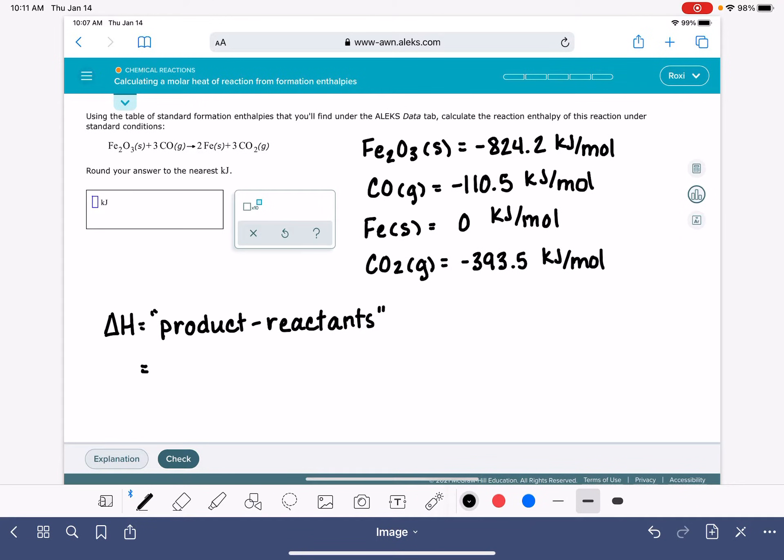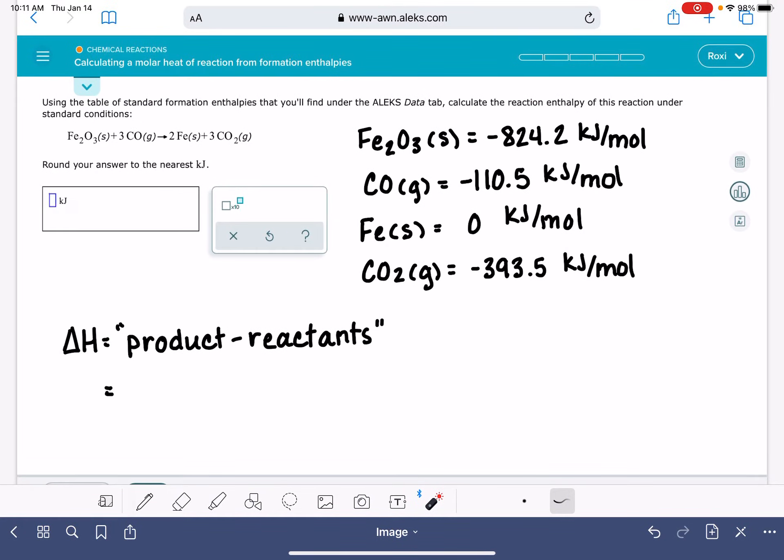So what we're going to do is take each one of the products one at a time. The first one that we have here is iron, and we are going to multiply the stoichiometric coefficient of that substance times its delta H value, which is just zero. So that's pretty easy for iron. And then our other product, we've got to get all of our products together.